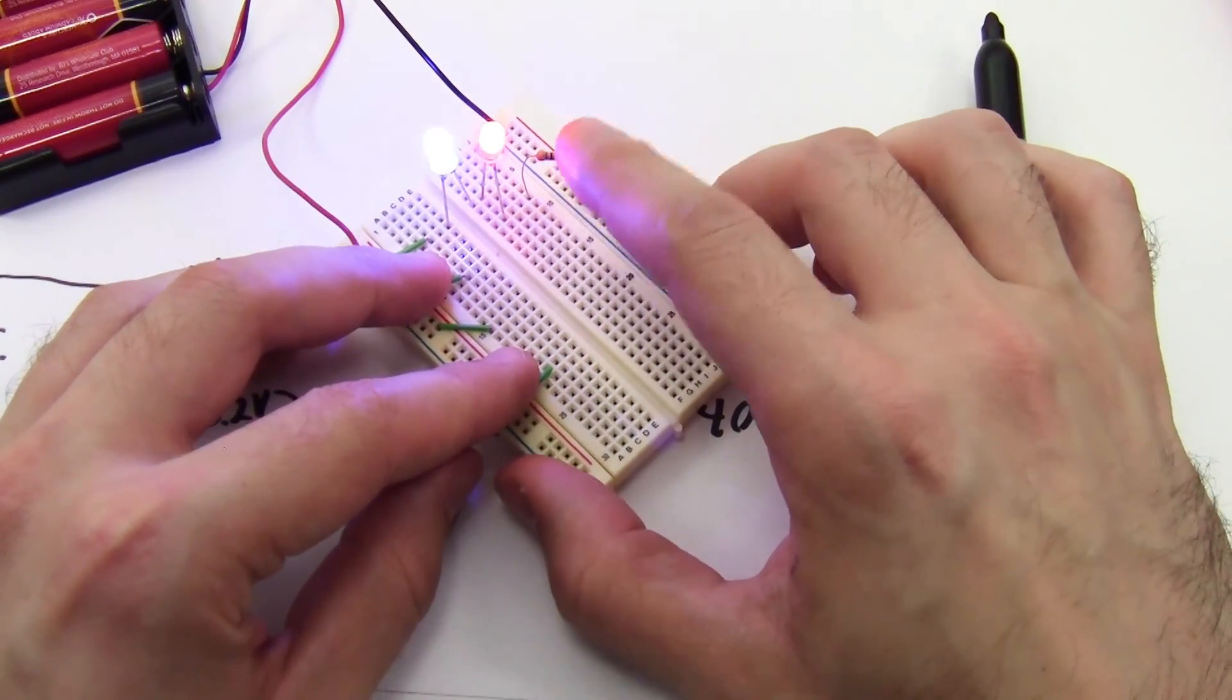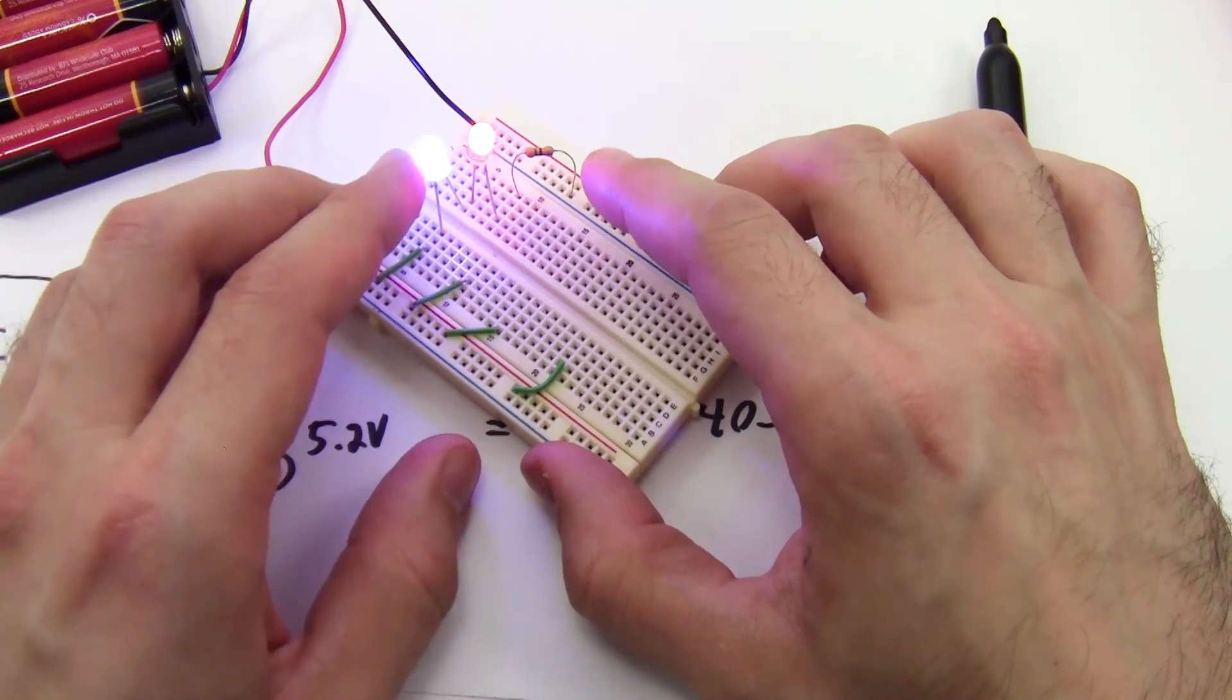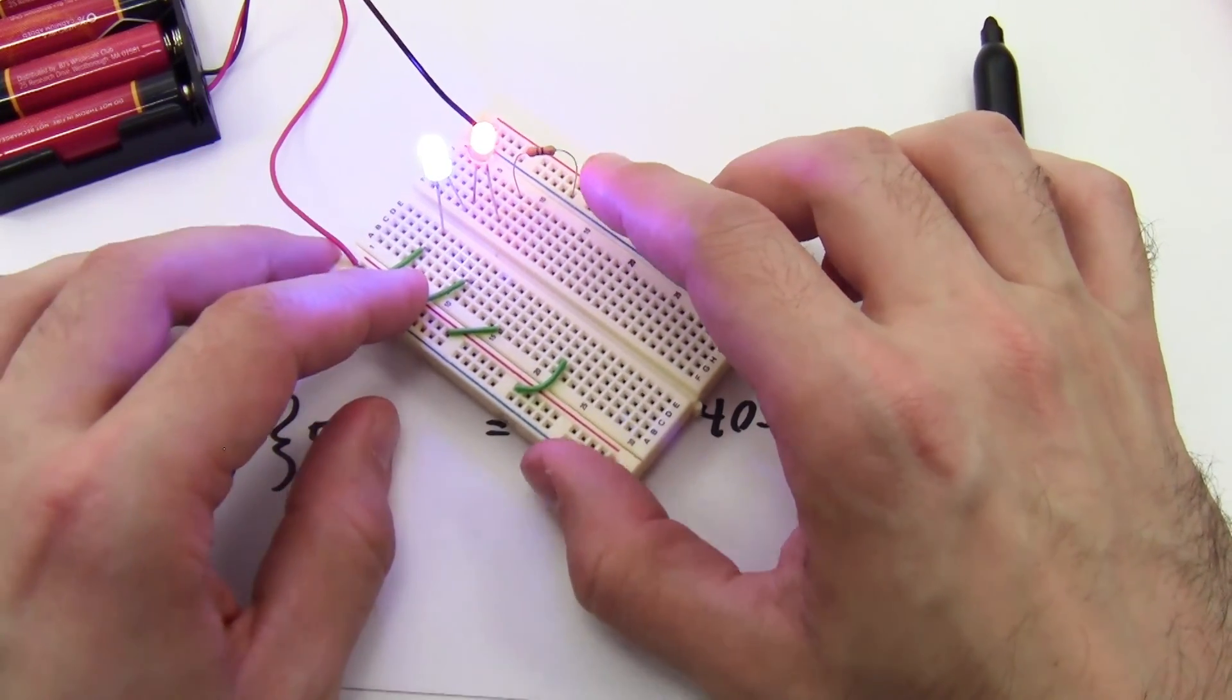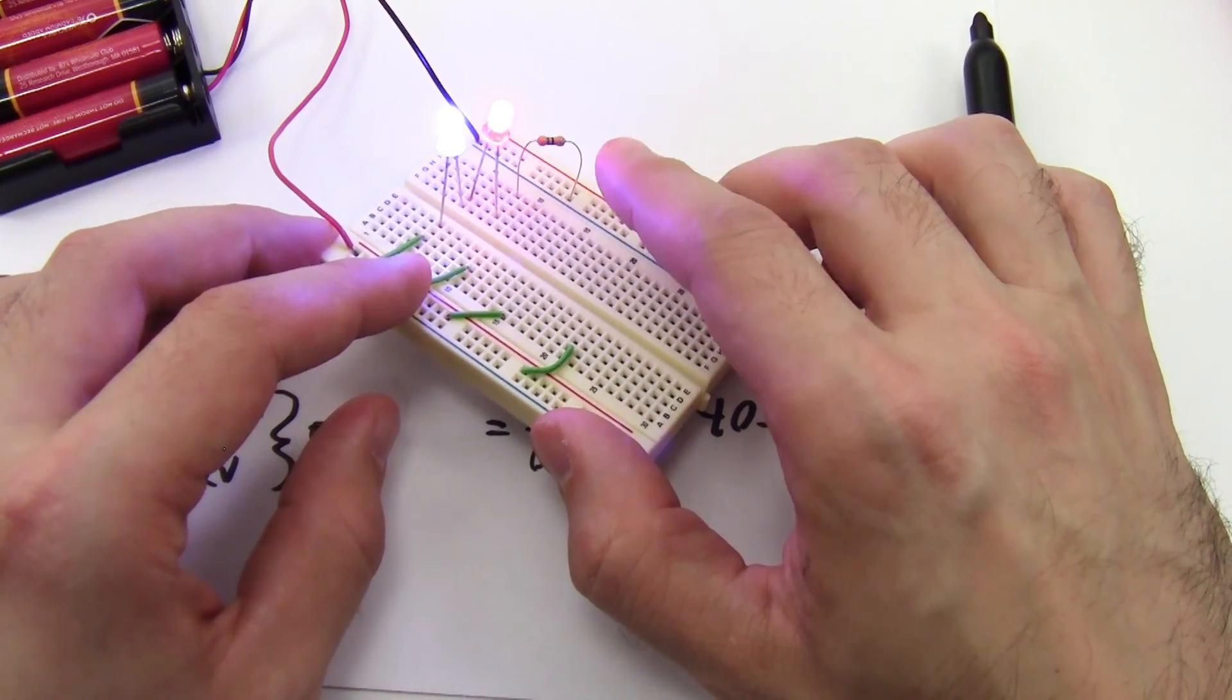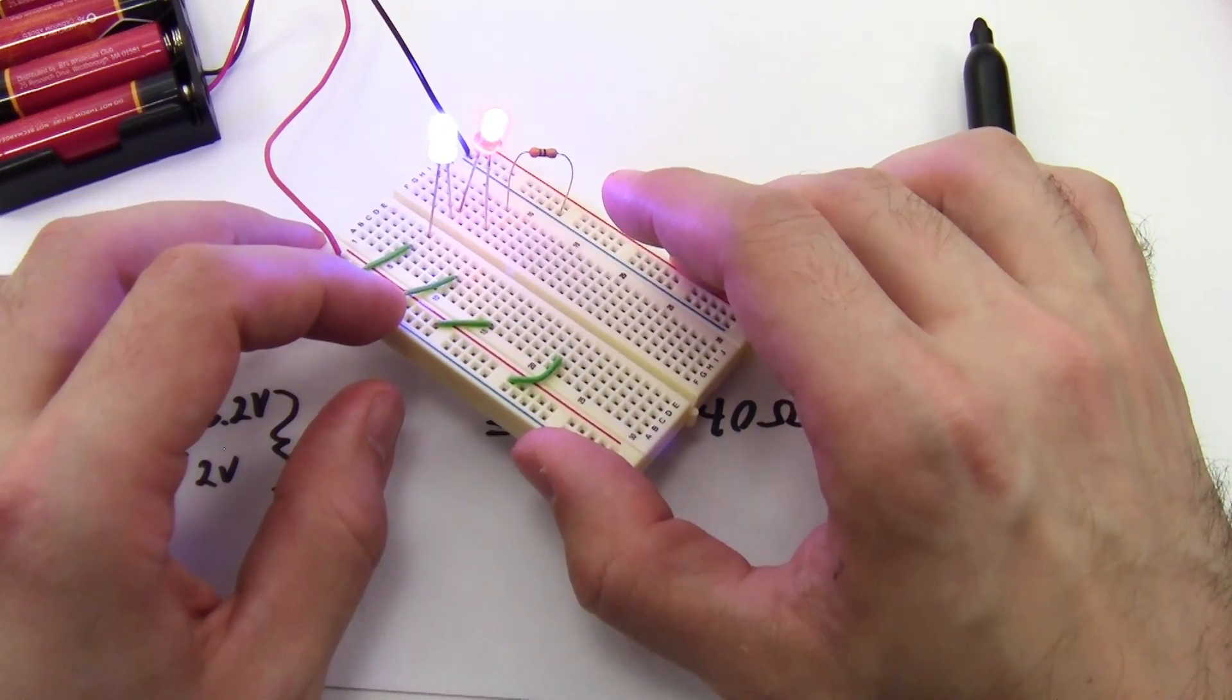And again, I have minimized the size of my resistor here. If I had put these LEDs in parallel, I would have needed a much larger resistor, and then I would have dissipated more power in the resistor, which is just being converted into heat, instead of being converted into light by the LEDs.